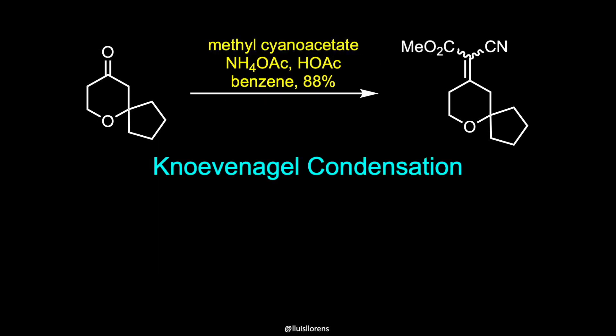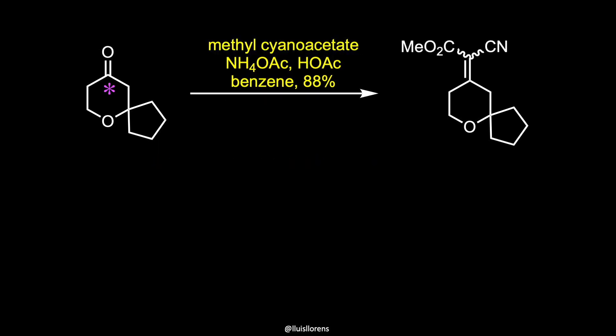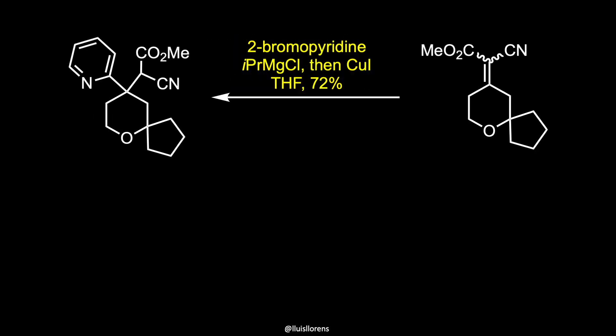A Knoevenagel condensation between the cyclic ketone and methyl cyanoacetate provided a mixture of regioisomers, which were not separated. An aryl Grignard reagent was then added to the unsaturated cyanoacrylate in the presence of a catalytic amount of copper iodide to give the conjugate addition product.